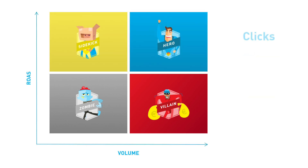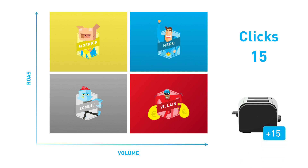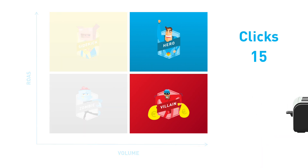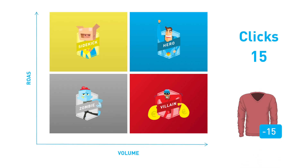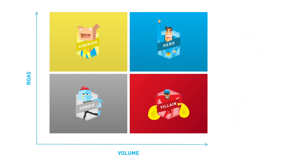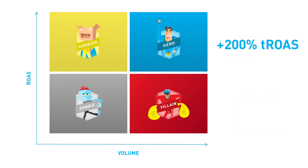You set the number of clicks at 15. This means that products that have more than 15 clicks will become a hero or a villain, and a product with less than 15 clicks will become a sidekick or a zombie. So, if a product has a higher actual ROAS than the 200% ProductHero target ROAS and it has more than 15 clicks, it becomes a hero.